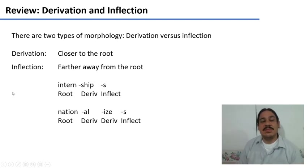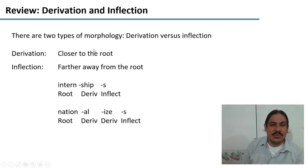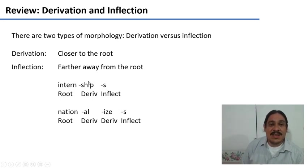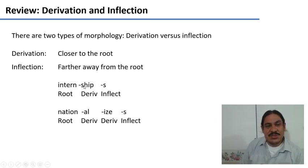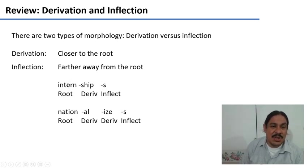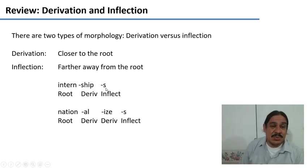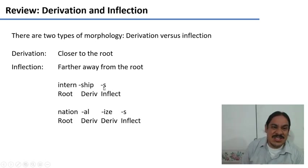Finally, derivational morphemes tend to live closer to the root, whereas inflectional morphemes live farther away. The word 'internship,' for example, has two suffixes: the root 'intern,' a derivational suffix '-ship' which changes the person who does the job to the job itself, and then at the edge of the word we have the '-s' for the plural: 'internships.' So inflectional morphemes live at the edges of the word.